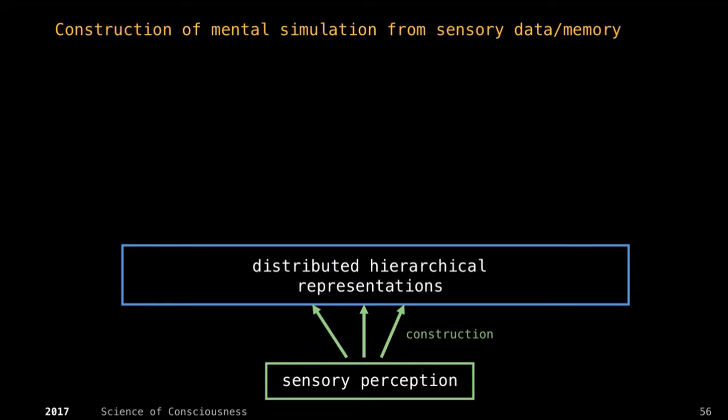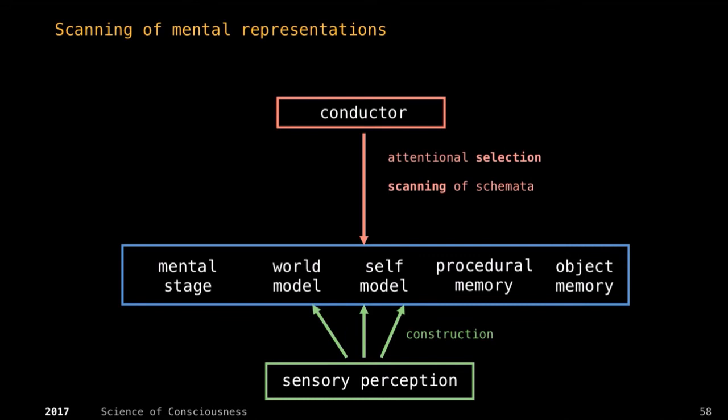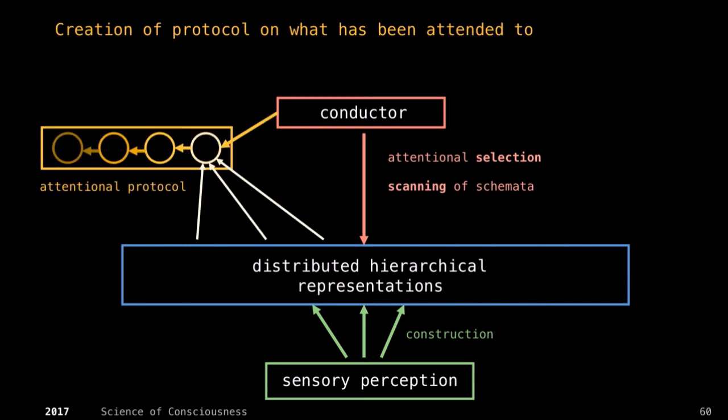So you have the sensory perception, you have distributed hierarchical representations from them, which are your mental simulations. Then you have your conductor that is able in a secondary process to scan part of these mental representations, basically see what your brain has decoded from the world. Most of this stuff is done completely subconsciously, autonomously, in parallel in the background by your brain. Your conductor is really paying attention to only very few things there, and actually not in real time. Your conductor also keeps a protocol of what it attended to. This protocol is the only place where experience is integrated. There's something like an equivalent of experiences in many parts of your brain in distributed fashions, but these different parts don't know about each other unless they talk to each other.